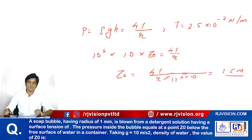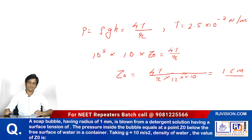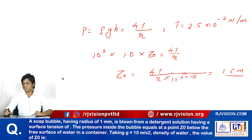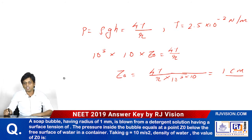Question 17 from Code R2, asked from the chapter Fluid Mechanics, topic Surface Tension. In this question, a soap bubble is formed whose radius is given, and surface tension is also given. The question asks: what is the pressure inside this soap bubble?